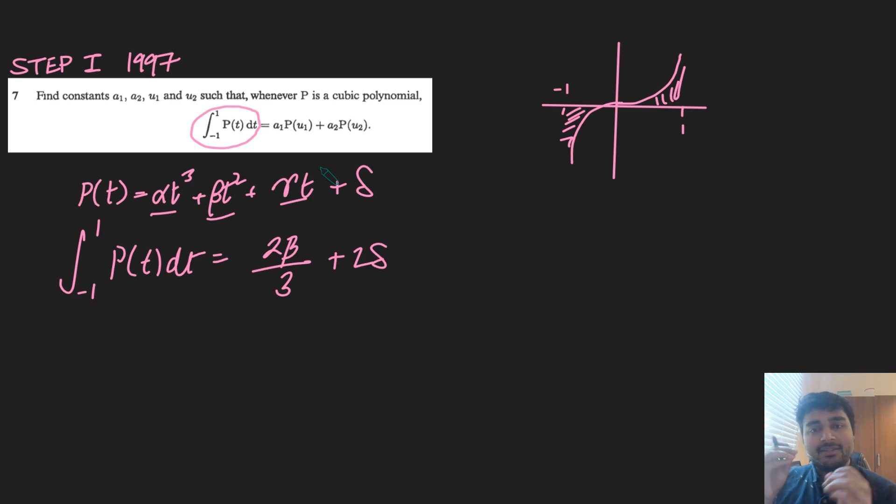So maybe the t value, or the u1 or u2 I should plug in, I should have u1 equals minus u2. So one is the negative of the other, because then when I substitute them in and add them up, provided of course a1 and a2 are the same, these terms will cancel out with each other.